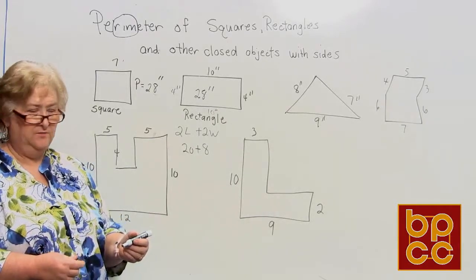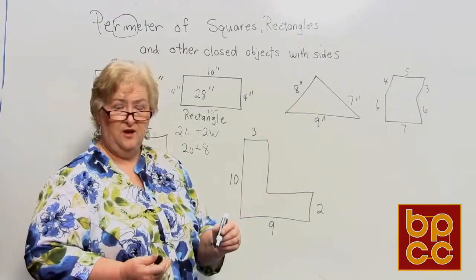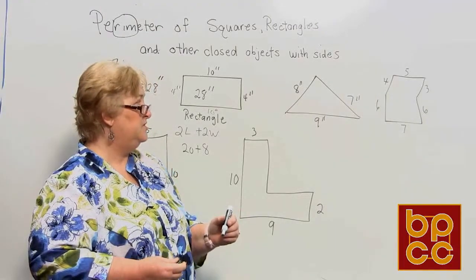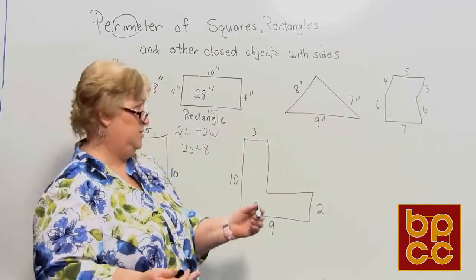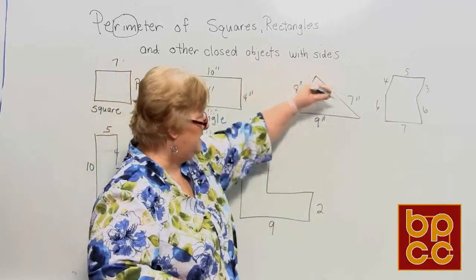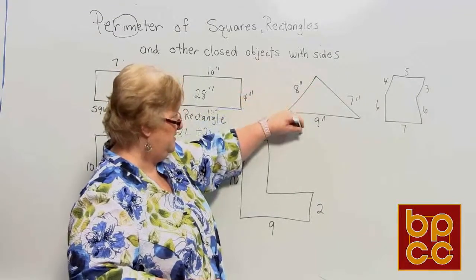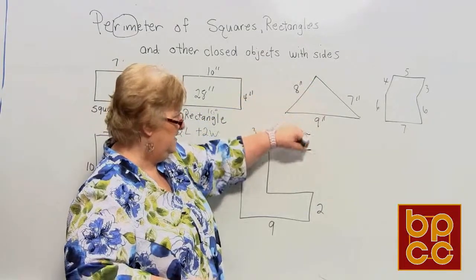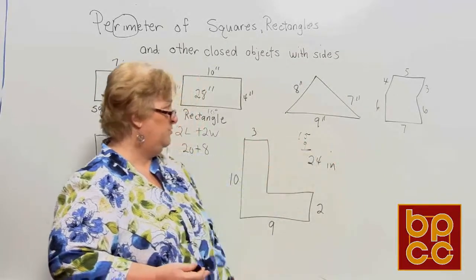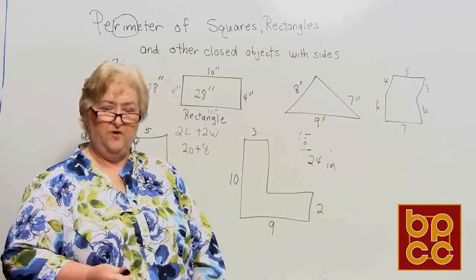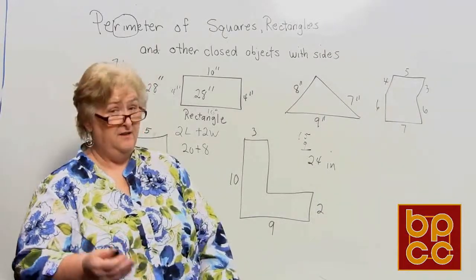Now the triangle — this particular one has three different measurements for each side. Perimeter means the walk around, so: 8 plus 7 plus 9. Eight plus 7 is 15, and 15 plus 9 is 24. The perimeter of that triangle is 24. Remember, it's just the walk around.